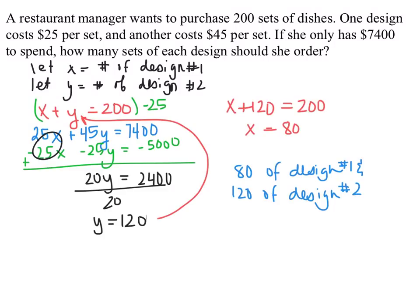I used the elimination method — you could have used substitution just as easily. I multiplied the top equation by negative 25 to get negative 25x minus 25y equals negative 5000, then added the two equations. The x's cancel out; you get 20y equals 2400, so y equals 120. Plugging that into the top equation gives x plus 120 equals 200, so x equals 80. That means you should get 80 of design 1 and 120 of design 2. Since this is a word problem, you don't write your answer as a coordinate point — just answer the question.